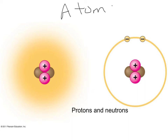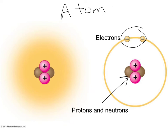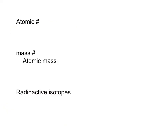Protons and neutrons are in the nucleus of the atom, and electrons are on the outside. The electrons are really what give the atom its chemical properties — these electrons floating in the electron cloud. Let's do some more definition review.